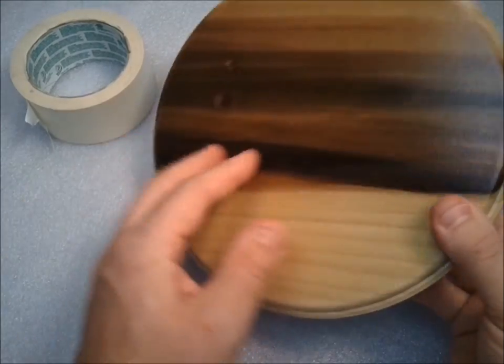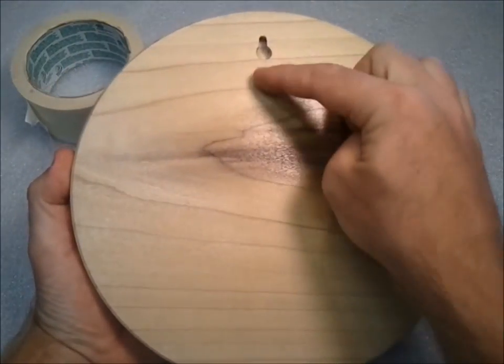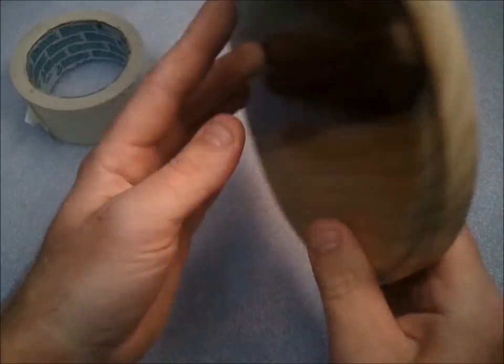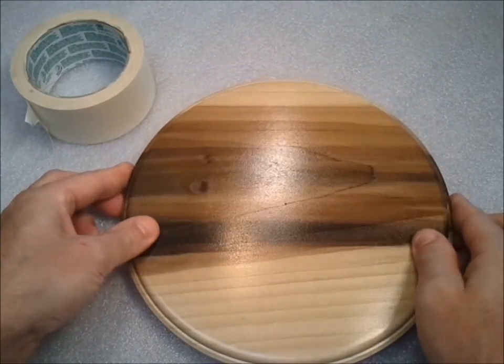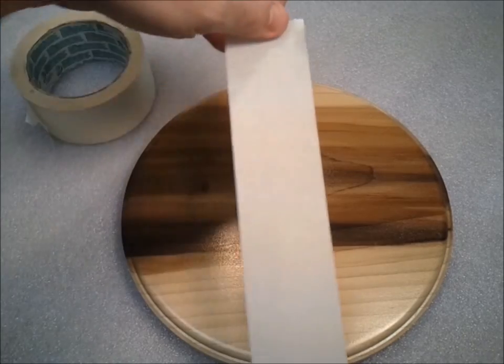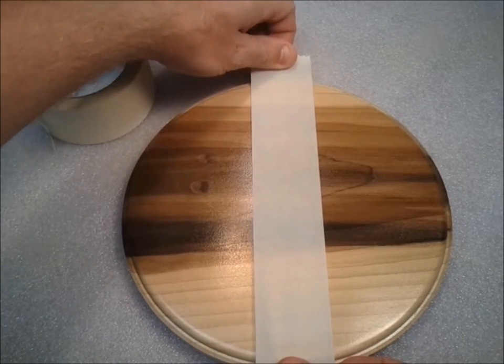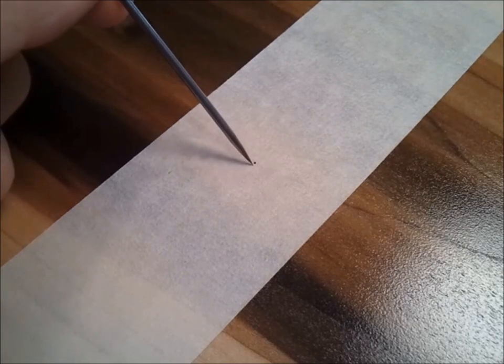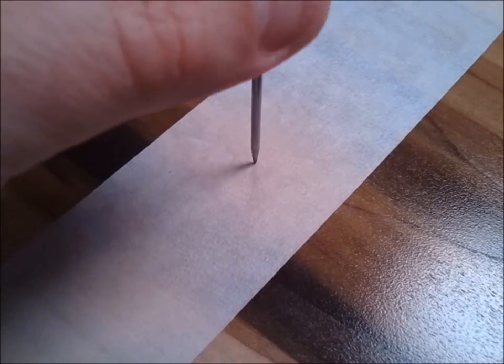For this next part, you want to imagine what plumb will be on the front side. It doesn't have to be perfect, but put a piece of masking tape where you think level will be. Find the little needle hole left by your compass for this next step. Make sure it's visible.